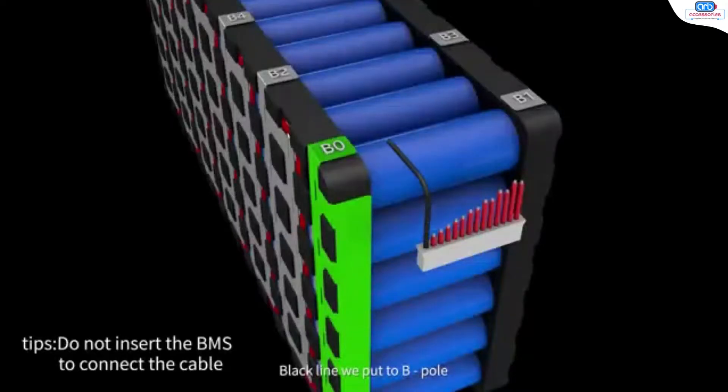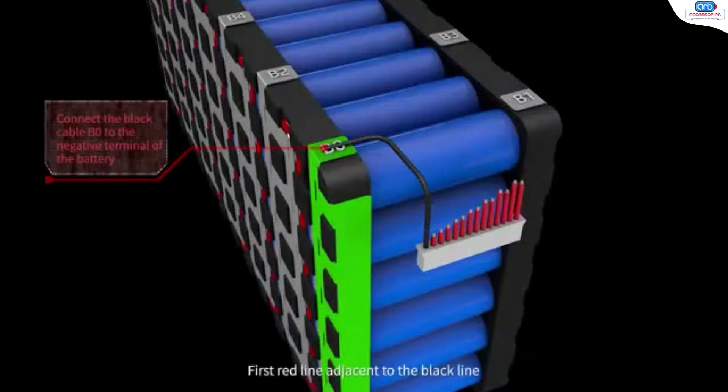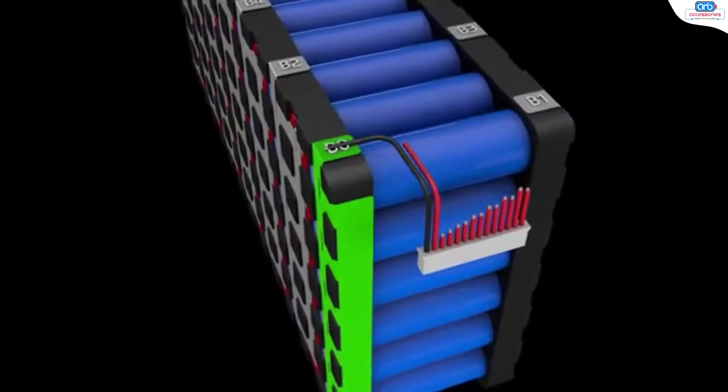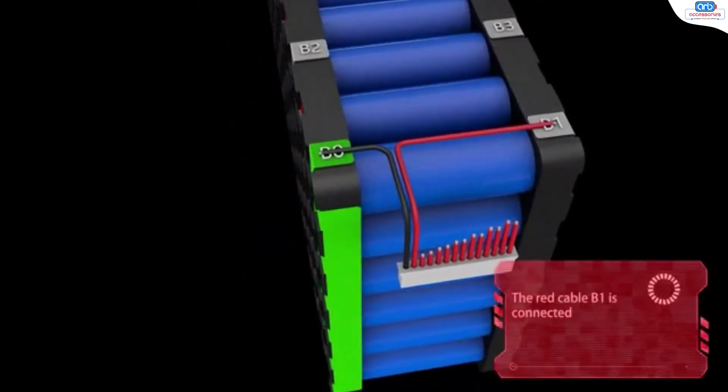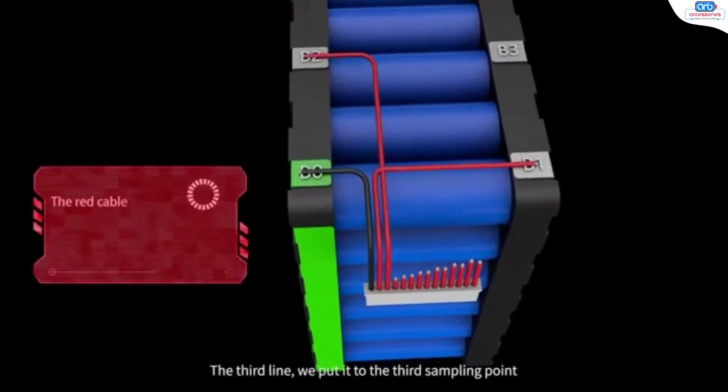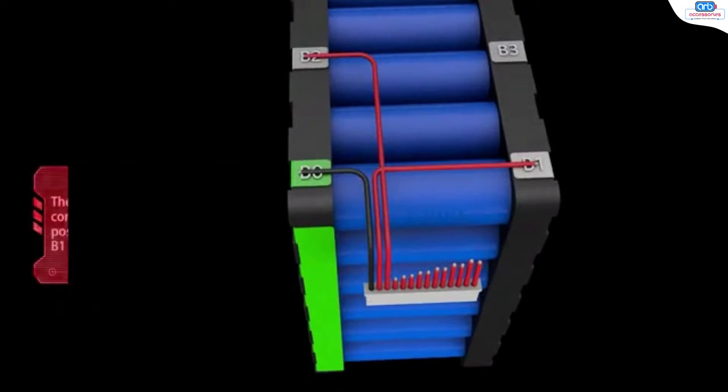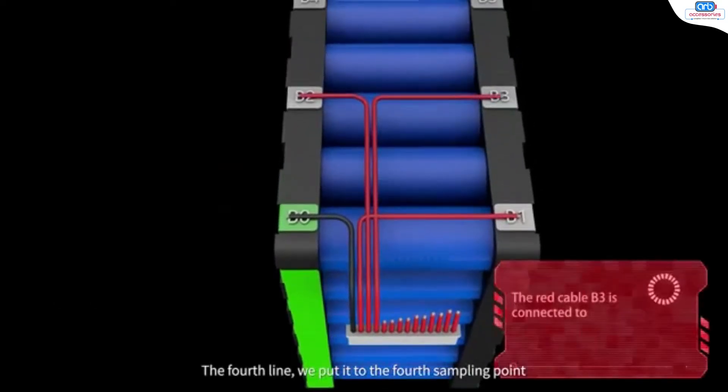Black line we put to be negative electrode pole. First red line adjacent to the black line, we put it to the B1 sampling point. The third line, we put it to the third sampling point. The fourth line, we put it to the fourth sampling point.